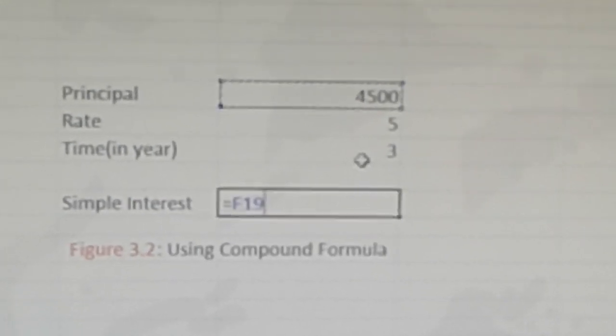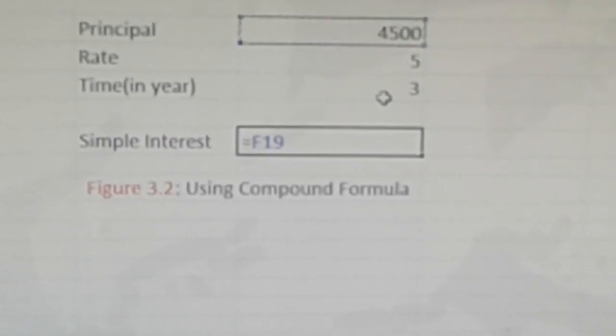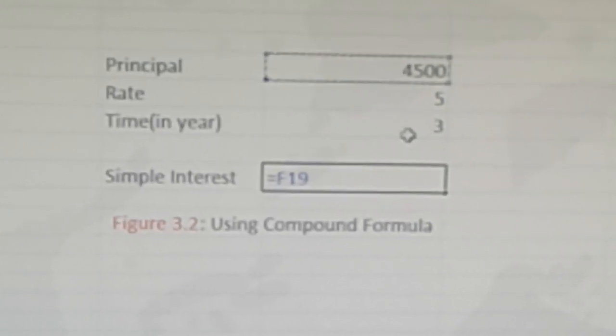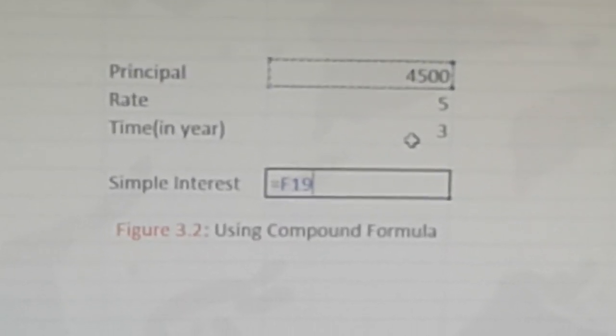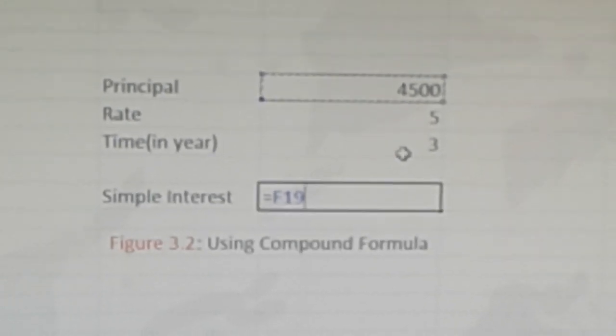Then we will press the asterisk sign, which is for multiplication on the keyboard. It is just above the 8 key. This asterisk is the multiplication operator.